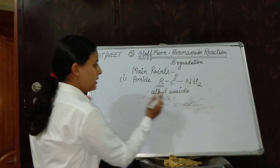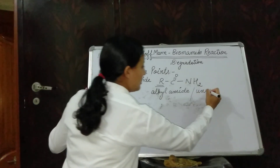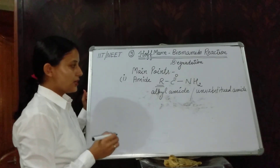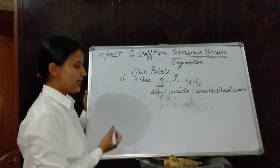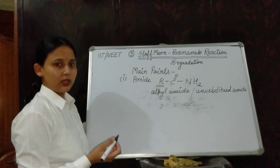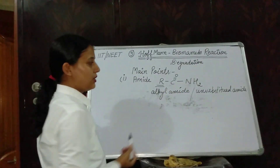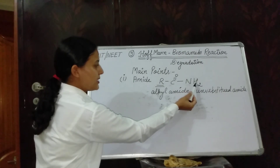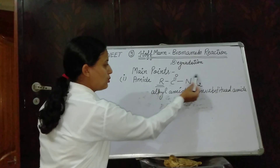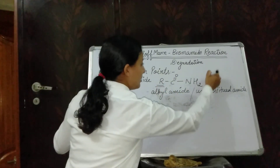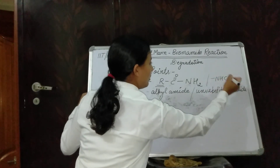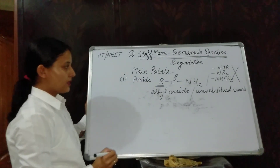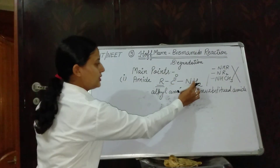You have to take only unsubstituted amide. How will you check if this is unsubstituted or substituted amide? You have to focus on the NH₂ group — two hydrogen atoms must be present, because the reaction mechanism will proceed with these two acidic hydrogen atoms. If you take NHR or NR₂ here, the reaction will not proceed. We will see the role of these two hydrogen atoms in the mechanism.